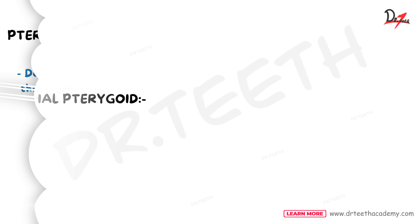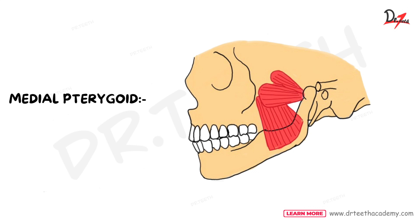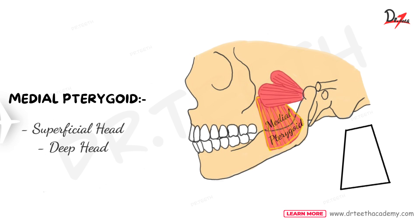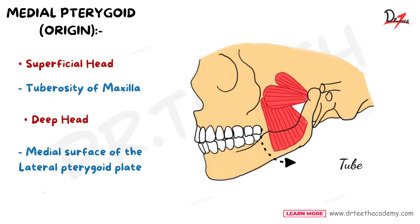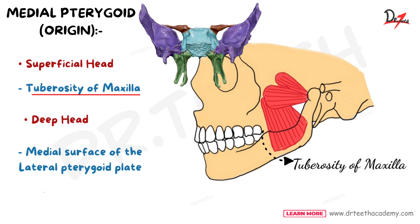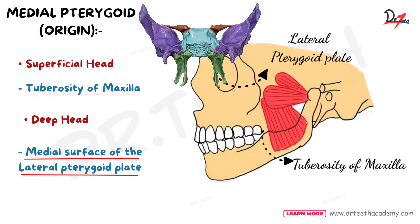The medial pterygoid muscle is large compared to the lateral pterygoid muscle. It is quadrilateral in shape and also has two heads — the superficial head and the deep head. The superficial head originates from the tuberosity of maxilla. The deep head originates from the medial surface of the lateral pterygoid plate — the medial surface of the lateral pterygoid plate is the origin of the deep head of the medial pterygoid muscle.